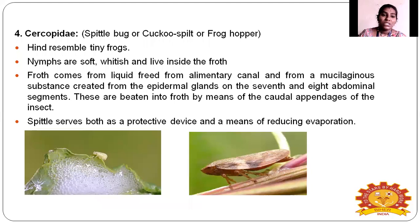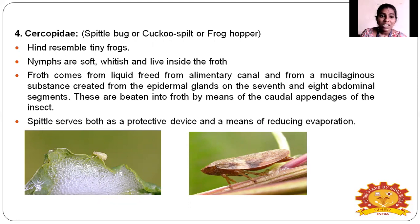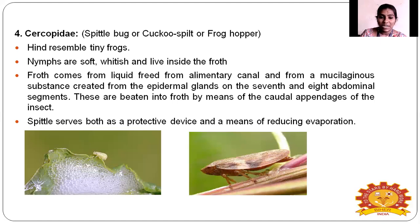Cercopidae — the spittle bug, cuckoo spit, or frog hopper. The hind end resembles a tiny frog. Nymphs are soft and whitish and live inside froth produced by the bug. The froth is a mucilaginous substance produced by liquid from the alimentary canal and secreted from epidermal glands. The spittle bugs live inside this froth.